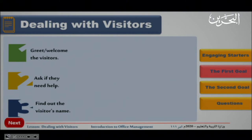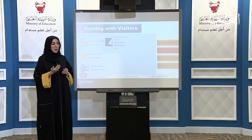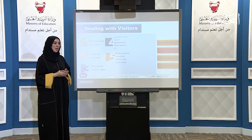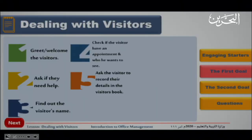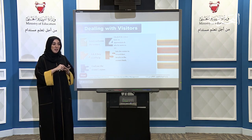Number three, find out the visitor's name — ask 'What is your name?' Number four, check if the visitor has an appointment and who they want to see. Number five, ask the visitor to record their details in the visitors' book — write your name, CPR number, time of arrival, and telephone number. This is for security purposes. Number six, issue a visitor badge.